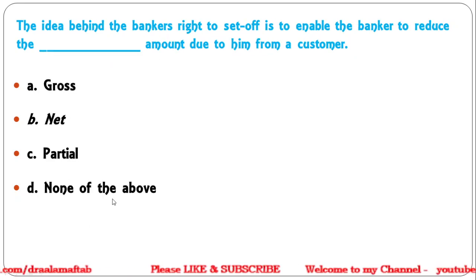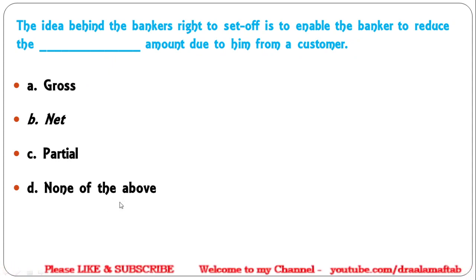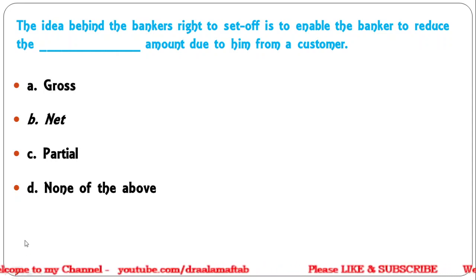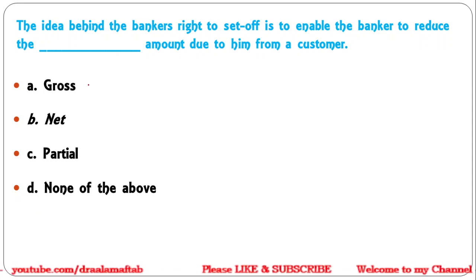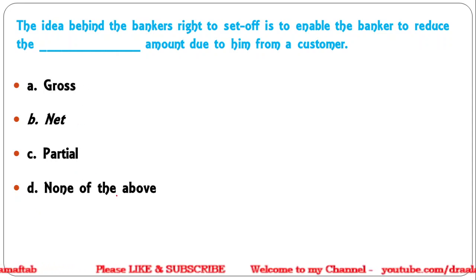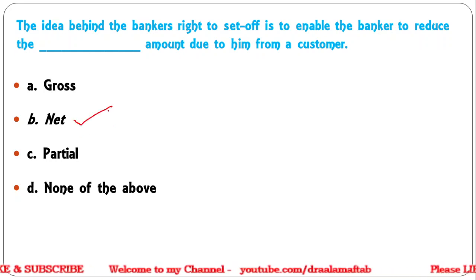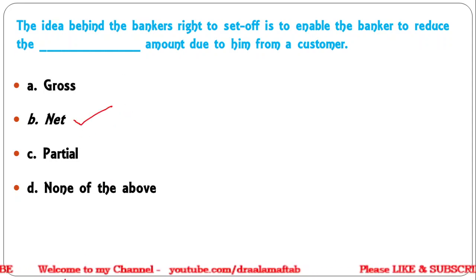Next question: The idea behind the banker's right to set off is to enable the banker to reduce a dash amount due to him from a customer. Options: Gross amount, Net amount, Partial amount, or None of the above. The correct answer is Net amount due to him from a customer.